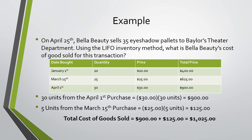On April 25th, Bella Beauty sells 35 eyeshadow palettes to Baylor's theater department. Using the LIFO inventory method, what is Bella Beauty's cost of goods sold for this transaction?